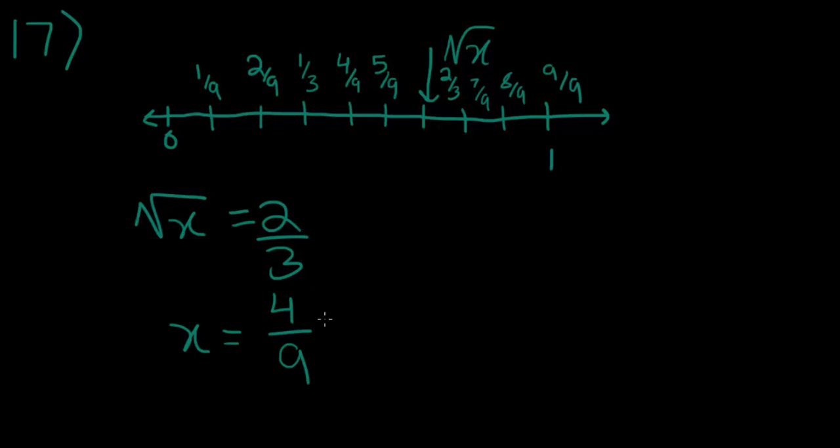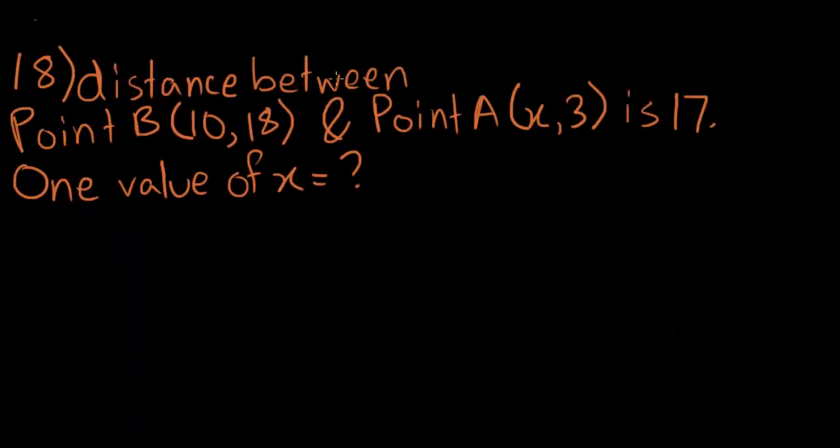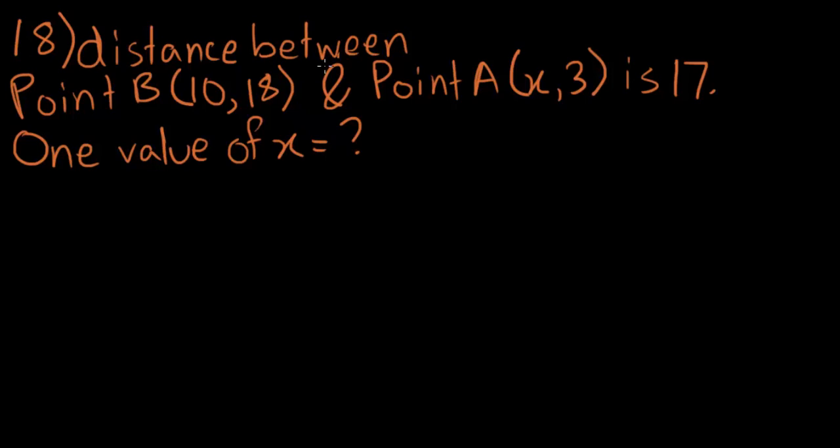So, we're moving on to the final question here, which is kind of a word problem. In the x,y coordinate plane, the distance between point B (10, 18) and point A (x, 3) is 17. What is one possible value of x? So, this is the hardest question in the section, because it involves the distance formula, which sometimes it's kind of tough to remember, especially all the plus and minuses. So, we're going to write it out here.